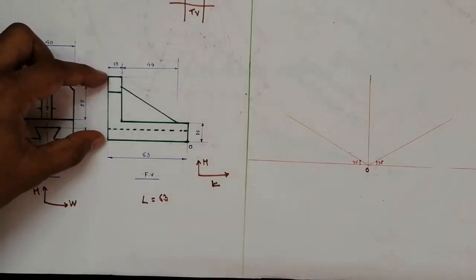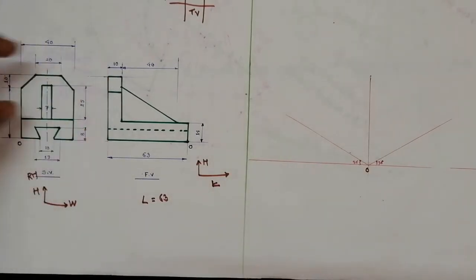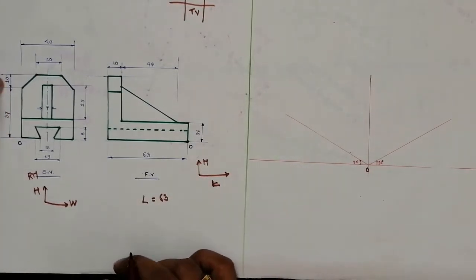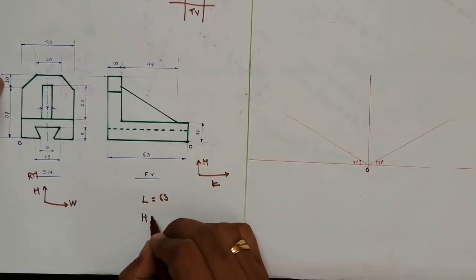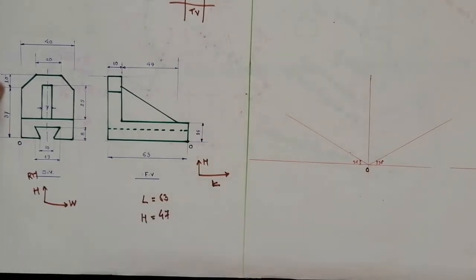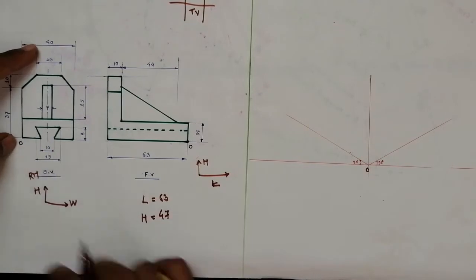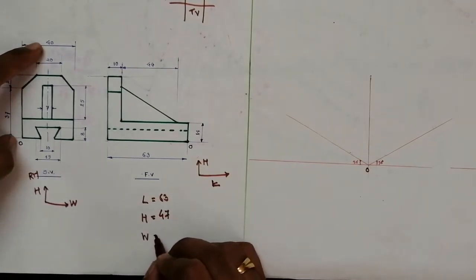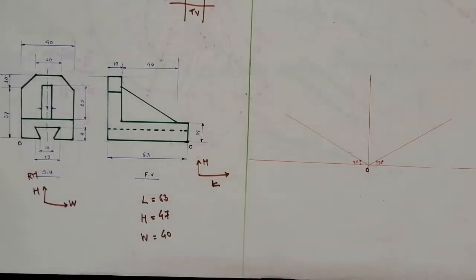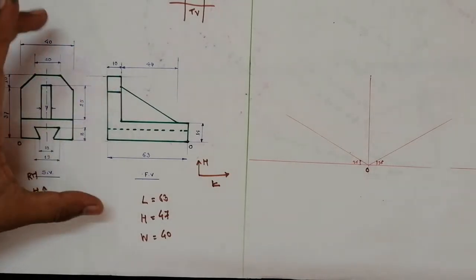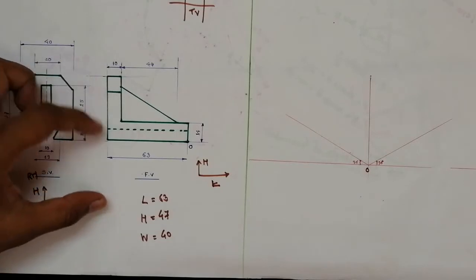For height, we can take it from the front view or the side view because in both views it is height. This is 37 plus 10, so the height becomes 47. Width is only in the side view, so width is equal to 40 mm. The most important first step of the problem is to find out the length, width, and height.